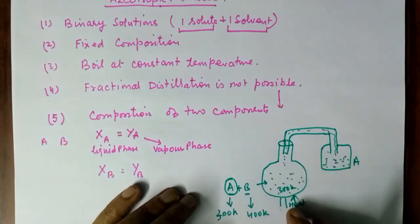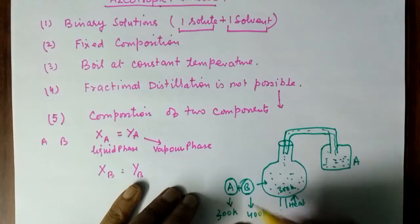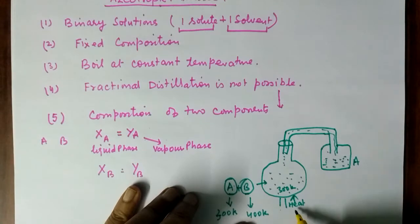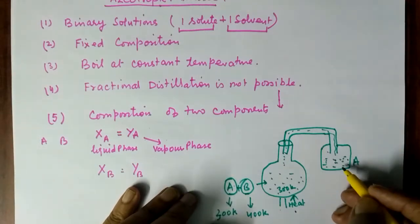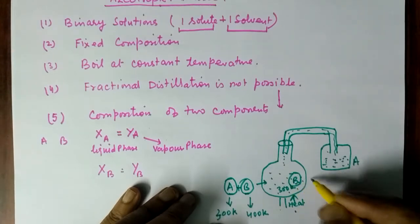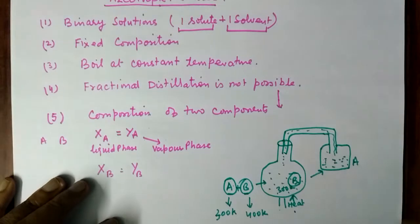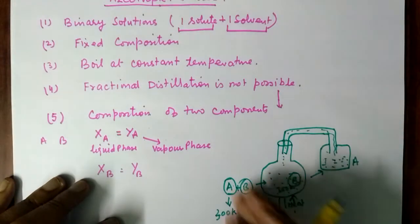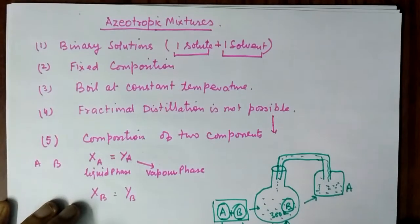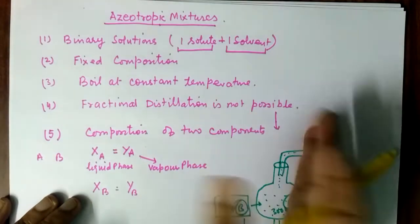Since the temperature was 300 K, component B, whose boiling point is 400 Kelvin, could not evaporate. So B remains in the original container and A is collected separately. This is fractional distillation — we use the difference in boiling points to separate two components. But in the case of azeotropic mixtures, both components boil at the same temperature, so fractional distillation is not possible.